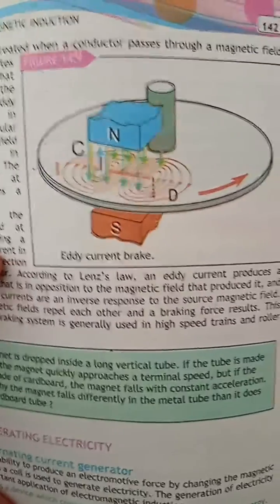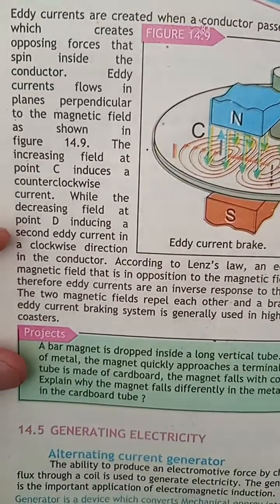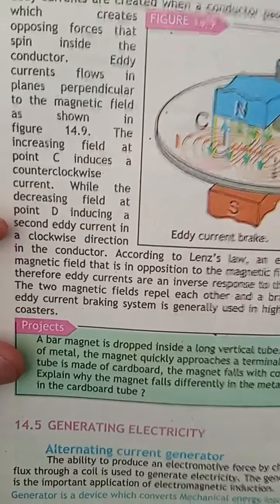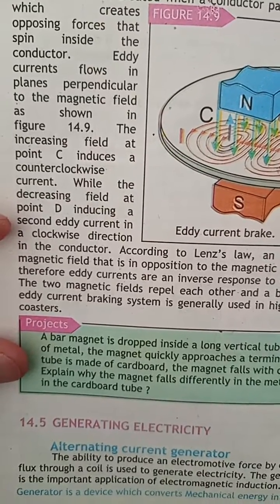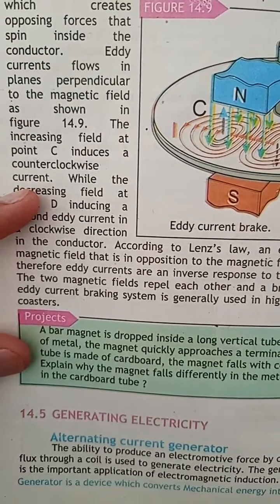Eddy Currents are created when a conductor passes through a magnetic field, which creates opposing forces that spin inside the conductor. Eddy Currents flow in planes perpendicular to the magnetic field, as shown in figure 14.9. The increasing field at point C induces a counterclockwise current.